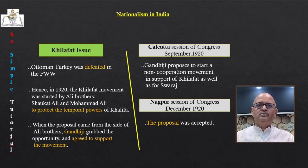Workers were confined to the enclosed space of the plantation and not allowed to move out freely. Under the Inland Immigration Act of 1859, workers were not permitted to leave the garden without permission — and in reality such permission was rarely given. Several times they tried to protest against atrocities but most protests were ruthlessly suppressed. For them, freedom meant the right to move freely and retain a link with the villages they had come from.